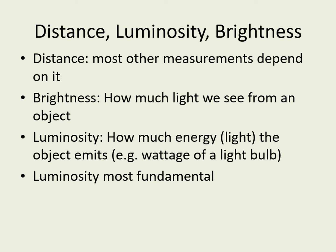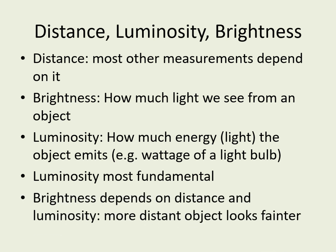Brightness is more complicated because it depends on distance as well as luminosity. If you have a 60-watt bulb a kilometer away from you, it looks much fainter than it does when it's right up next to your face. The same is true of stars — the farther it is from you, the fainter it appears. So brightness, distance, and luminosity are all tied together. In the next few slides, we'll keep going back and forth between them, but we'll start out with a way of measuring distance that is independent of luminosity.